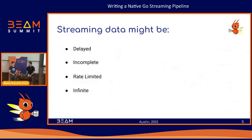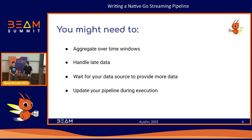This sort of data might be delayed or incomplete if there are network challenges, or if your data source just hasn't gotten you the data yet. You could have rate limits, or the data might not be all available yet. It can be conceptually infinite, and you might need to do some sort of aggregation — emitting 10 minutes worth of data and figuring out how to handle late data, like what happens if data comes in at the 11th minute. You might need to wait for your data source, or handle draining and updating your pipeline during execution if there's a bug or you want to add functionality. This talk will focus on how to write a robust streaming source so you have all the information you need to handle things further along the pipeline.